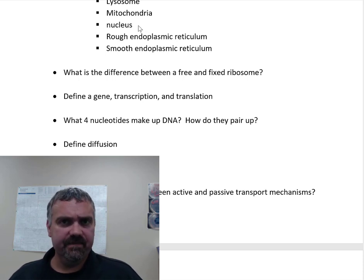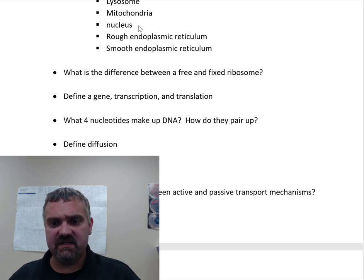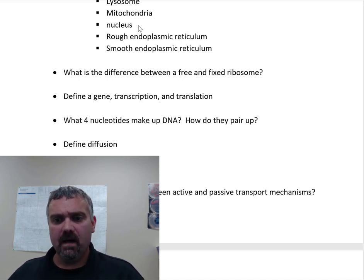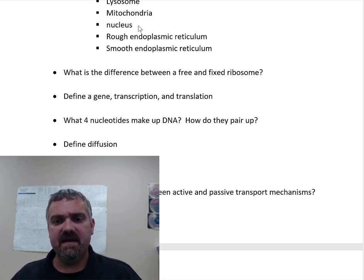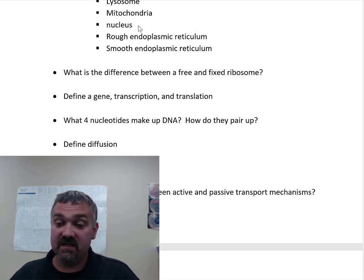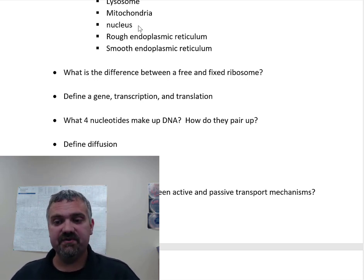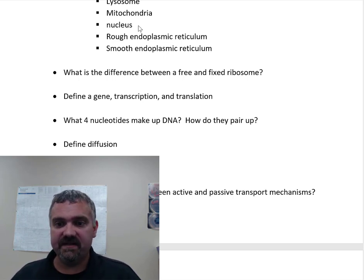The nucleus is called the control center, but primarily it houses and protects your DNA — I think of it more like a vault. Inside the nucleus, you'd have the nucleolus, which synthesizes the proteins needed to make your ribosomes. Important things happen in the nucleus, but its primary function is to keep your DNA safe. That will make more sense when we discuss why transcription and translation are separate processes.